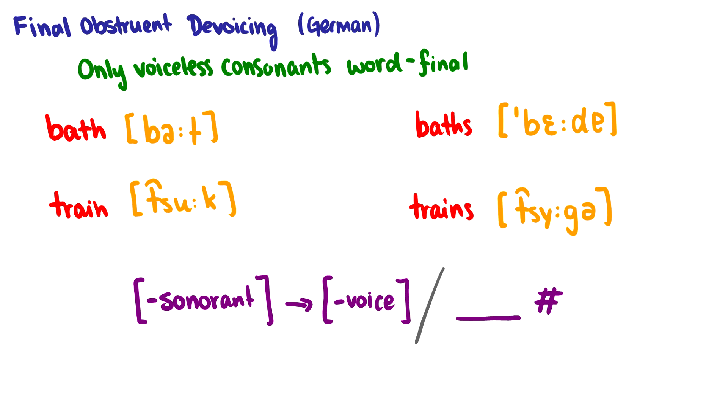So for instance, in the word bath, we hear it as bat, but with baths, we would hear bede, or beda. For train, you would hear something like suk, but for trains, you'd say tsuge.